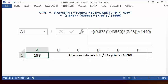And in A1 is your answer: 198 gallons per minute. So that's your answer.